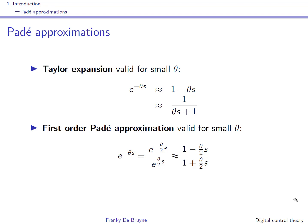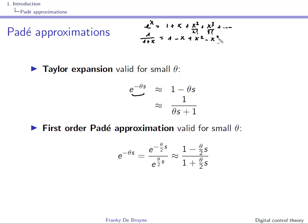In continuous time, this exponential function is problematic for control design, so what we do is approximate it. You have to remember that the Taylor series of the exponential function is 1 plus x plus x squared over 2 factorial plus x cubed over 3 factorial and so on. We'll also be interested in the Taylor series of 1 over 1 plus x, which is 1 minus x plus x squared minus x cubed and so on. We use this Taylor series to approximate the delay.